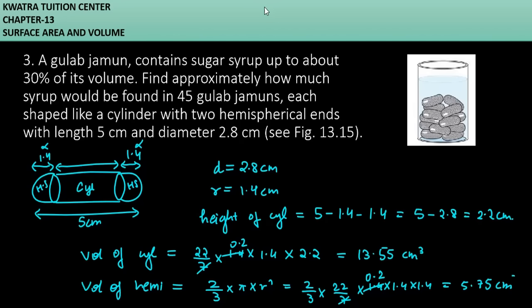So multiply करने पर, divide करने पर I am getting 5.75. This is for 1 hemisphere. हमारे पास तो 2 hemispheres हैं, तो इसको हमें किस से multiply करना पड़ेगा? 2 से. So this will give you 11.50.